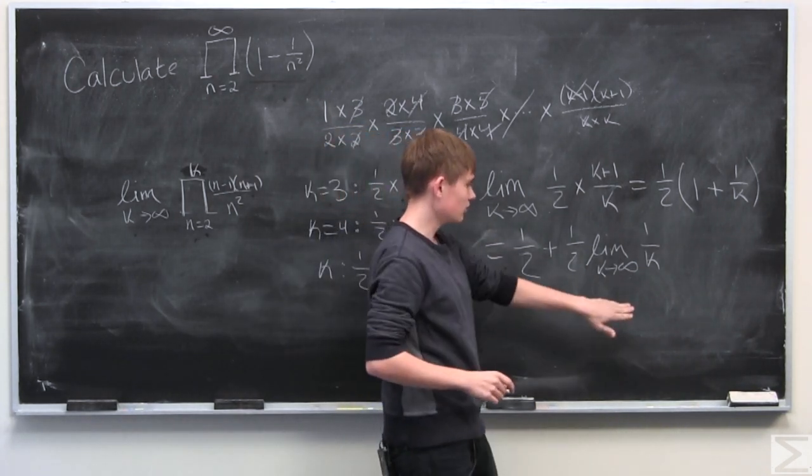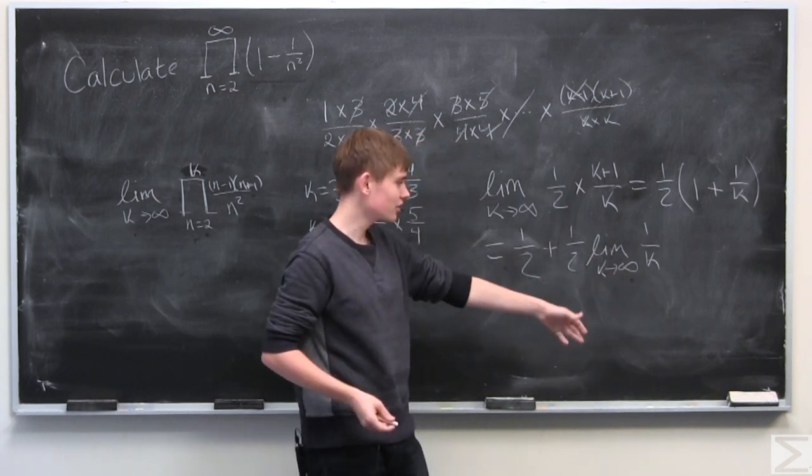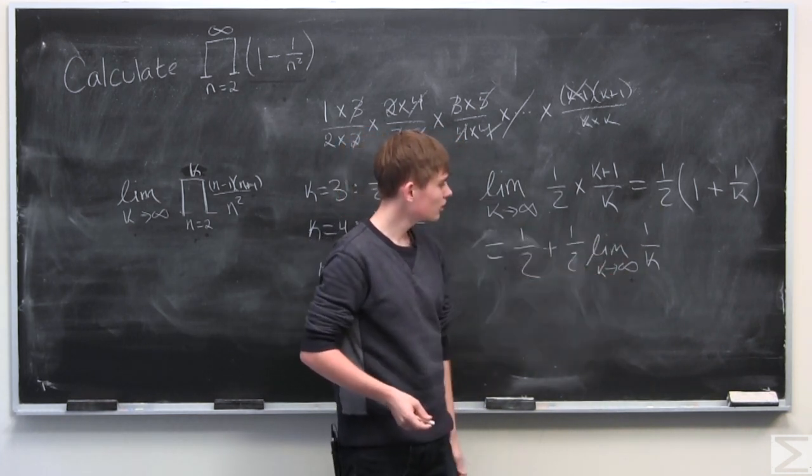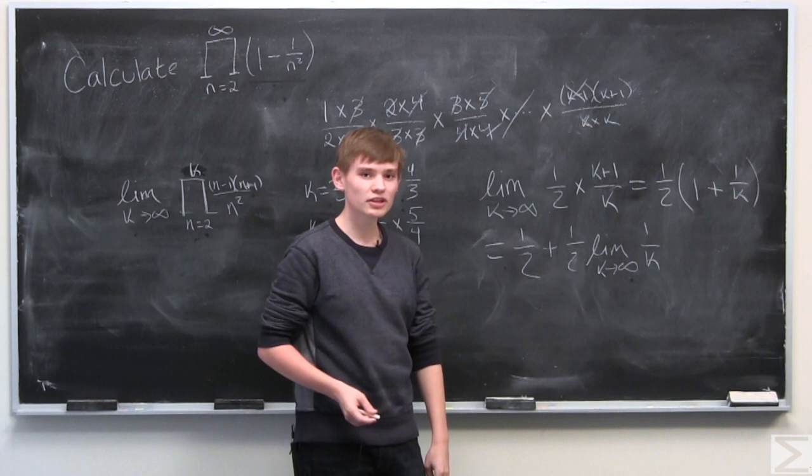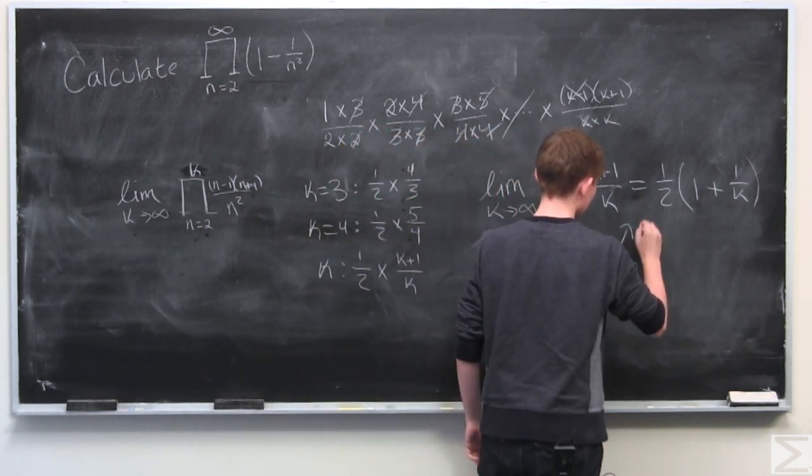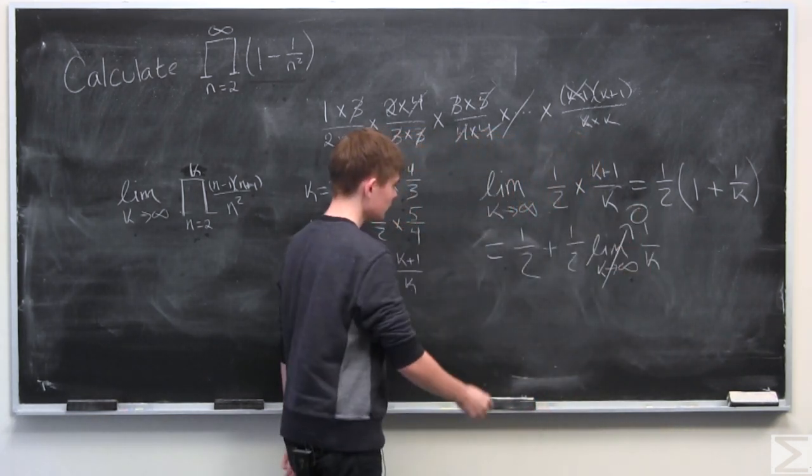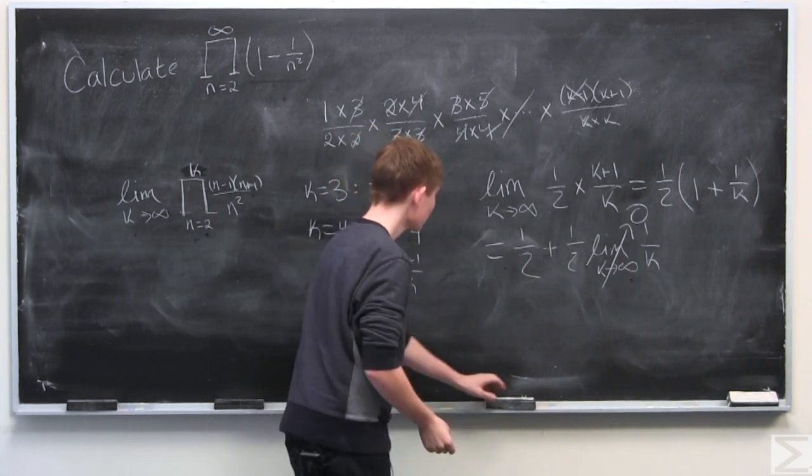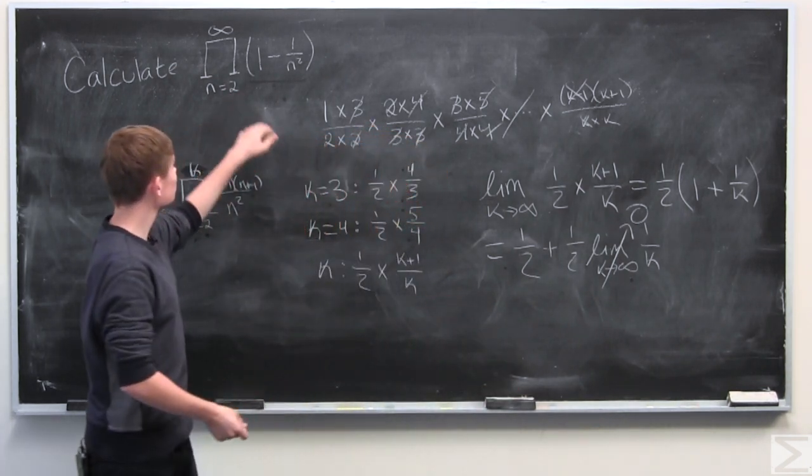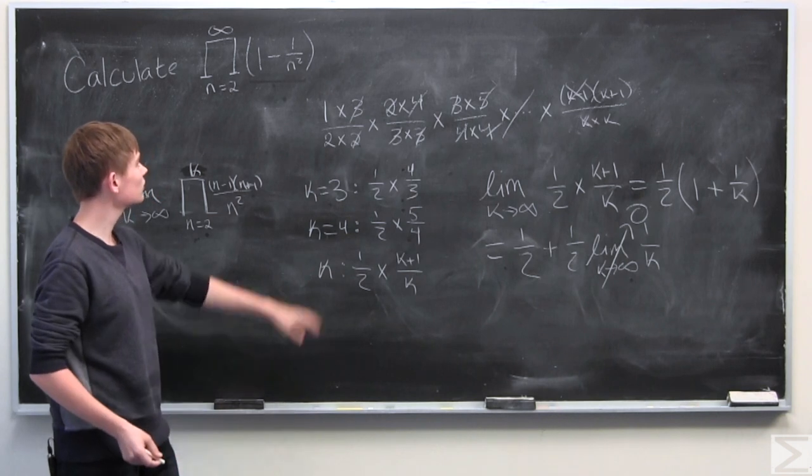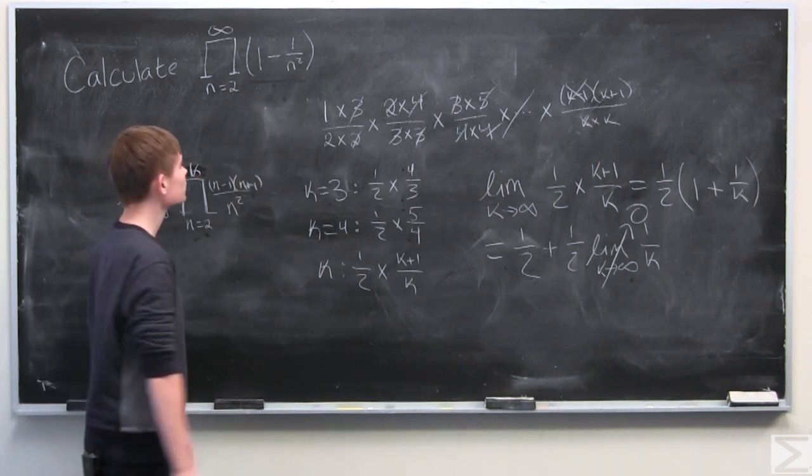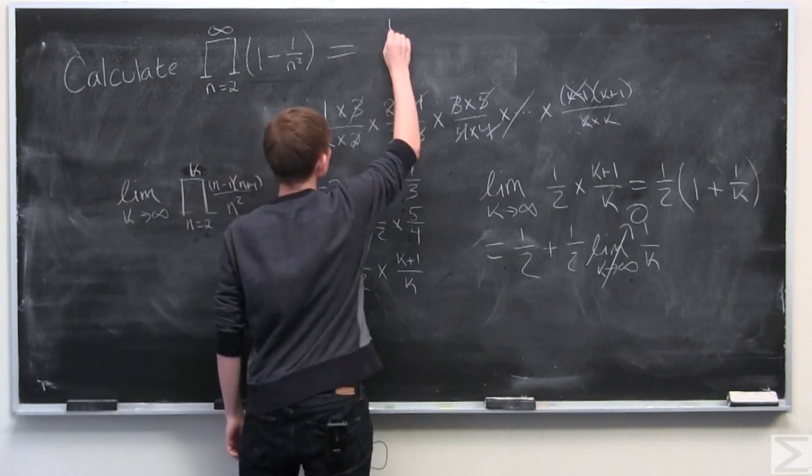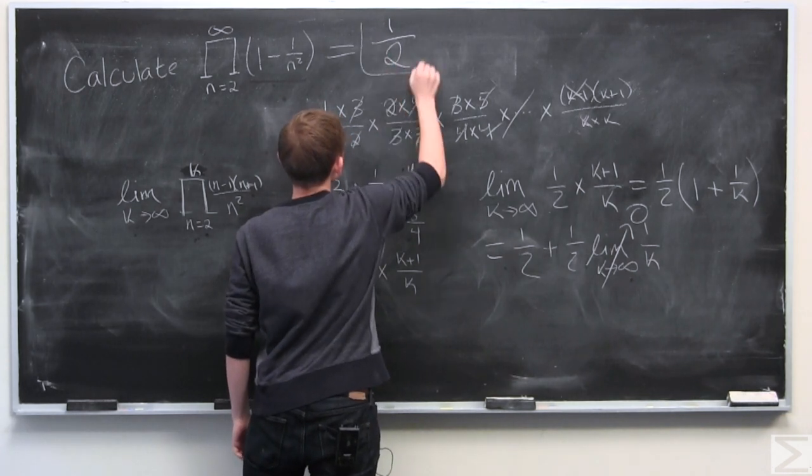And if you've taken a real analysis course or anything of the sort you should know that the limit of 1 over k as k approaches infinity is 0. And so we find that the infinite product from 2 to infinity of 1 minus 1 over n squared is just equal to 1 half.